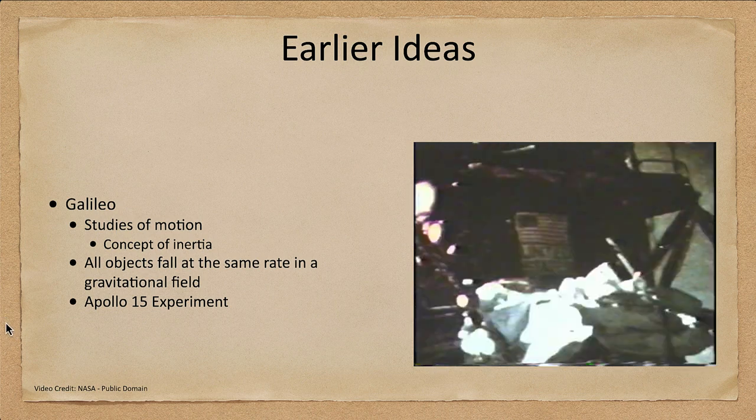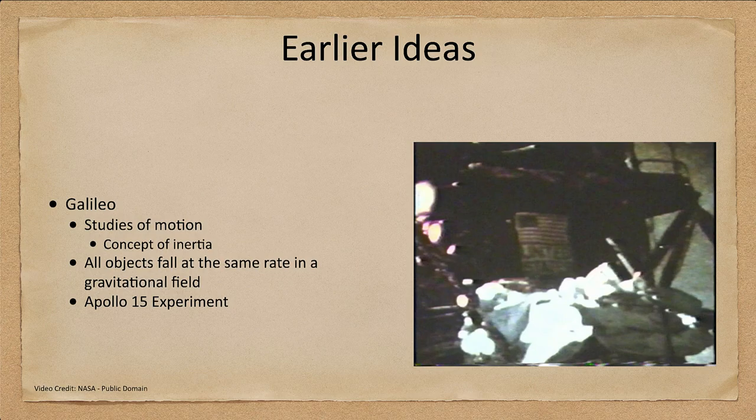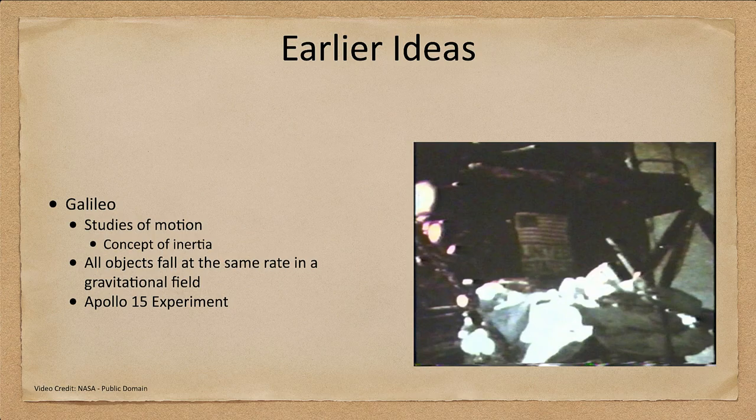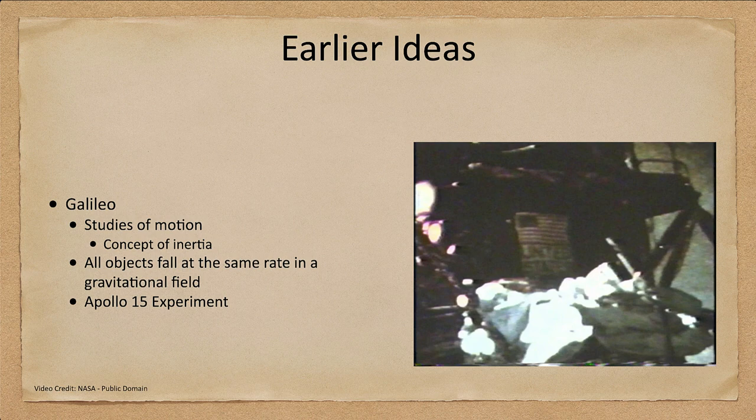Now what we saw there was two different things. First of all we noticed that the objects fell at the exact same rate. The hammer and the feather hit the ground at the same time. But you may also have noticed that they fell at a much slower rate than they would here on Earth. You know how fast something like a hammer might fall when you drop it on Earth. And here we are able to see that it was much slower showing the lower gravitational field of the moon.